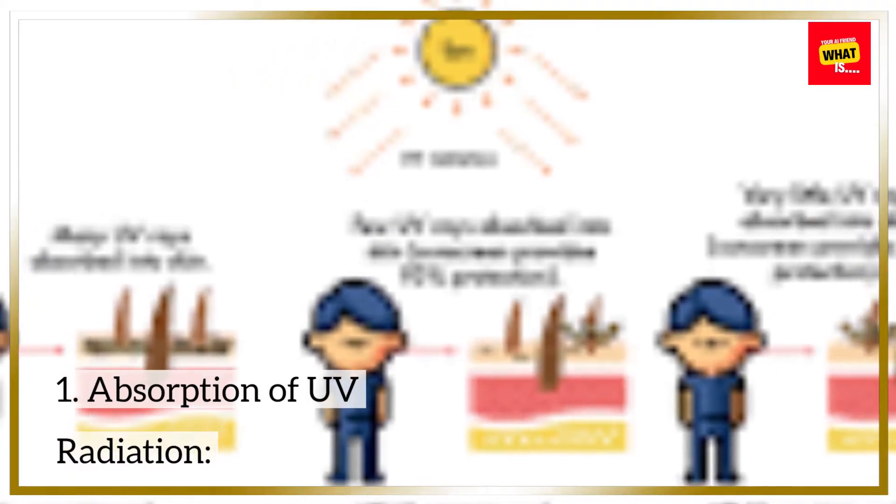1. Absorption of UV Radiation: Sunscreen contains organic or chemical filters that absorb UV radiation. These filters are designed to absorb specific wavelengths of UV light, preventing them from penetrating the skin. UV radiation can damage skin cells and DNA, leading to various skin issues, including sunburn and an increased risk of skin cancer. By absorbing UV rays, sunscreen helps reduce the amount of radiation that reaches the skin.